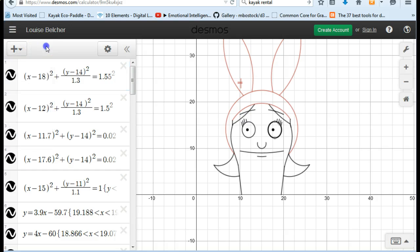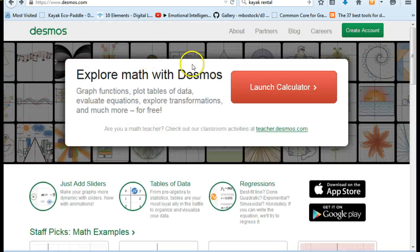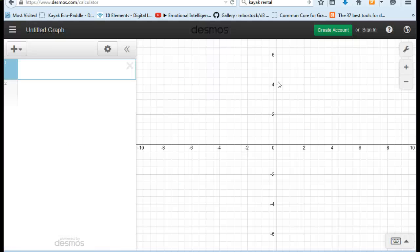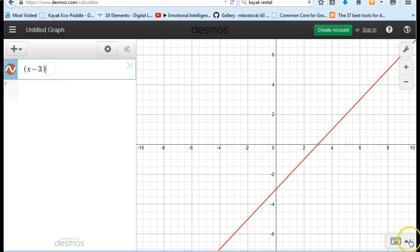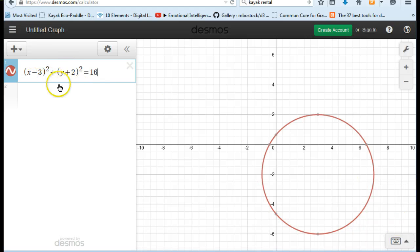Once you get the general form of the equation, you can go through and you can start playing with your own. You can go ahead and sign into your own account and start playing with your own equations. For instance, the general equation of a circle looks something like this: (x-3)² + (y+2)² = 16. This creates a circle whose center is at (3, -2) and whose radius is the square root of 16, or 4.